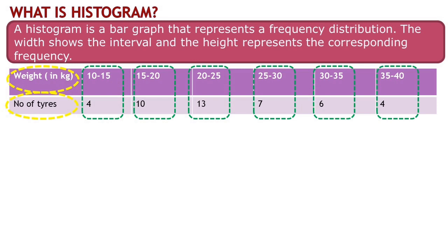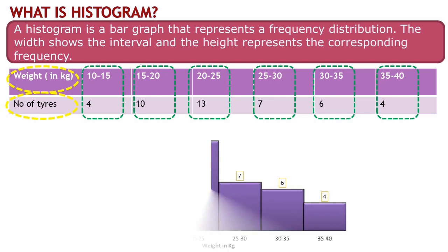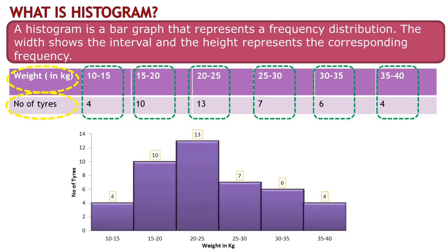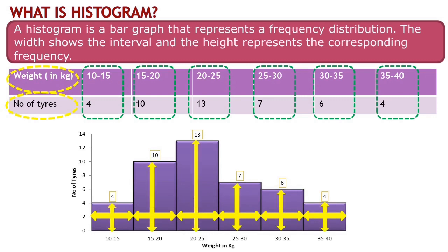Now let's plot the histogram using this data. The width of each bar represents the interval and the height represents the frequency of tires within that interval. This histogram shows us a clear visual representation of how the tire weights are distributed across different intervals.